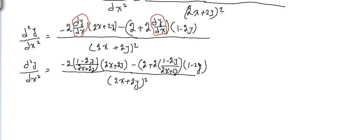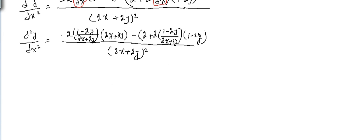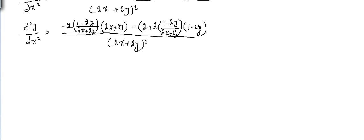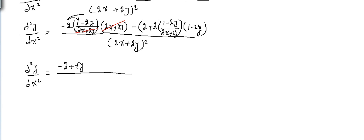Let's see how we can simplify this more. This is straightforward because we can remove (2x + 2y) from the numerator and from the denominator. Then we are left with d²y/dx², and it's not fully simplified yet — we try to simplify it more. So it's minus 2 plus 4y, multiplying minus 2 here, and this factor multiplied with this factor.